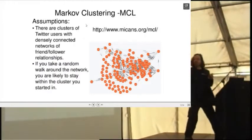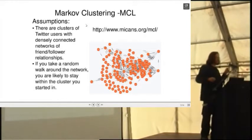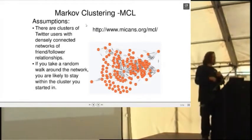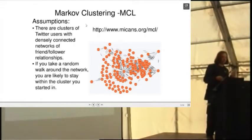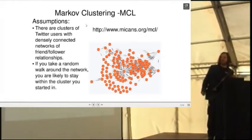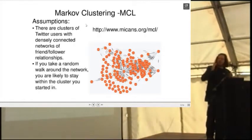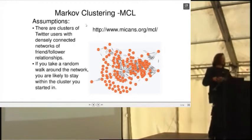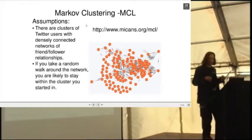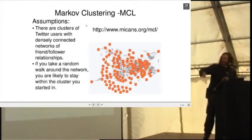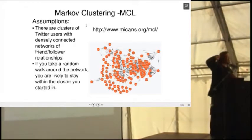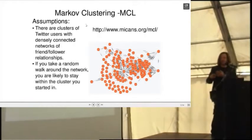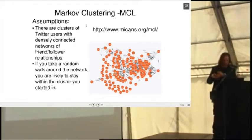Assumption: your various social media networks are a little bit tribal. There will be people you know from work, people you know from various social contexts, etc. So we're going to represent your Twitter network as a graph. And we're going to say, because we're all a little bit tribal, there are going to be nodes on that graph that are more densely connected to each other than everybody else.